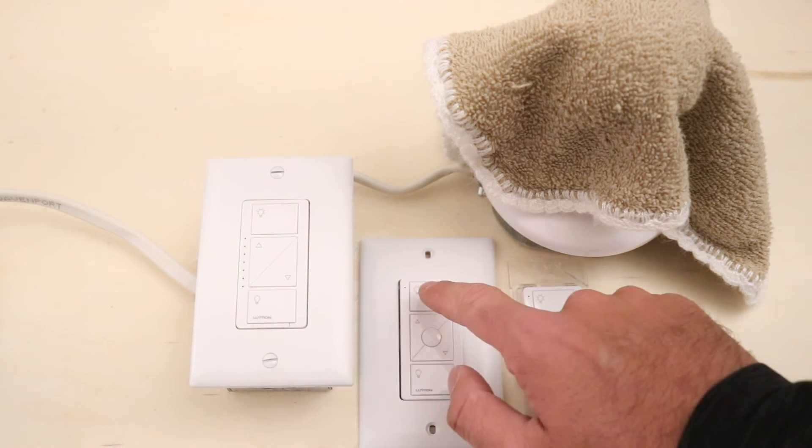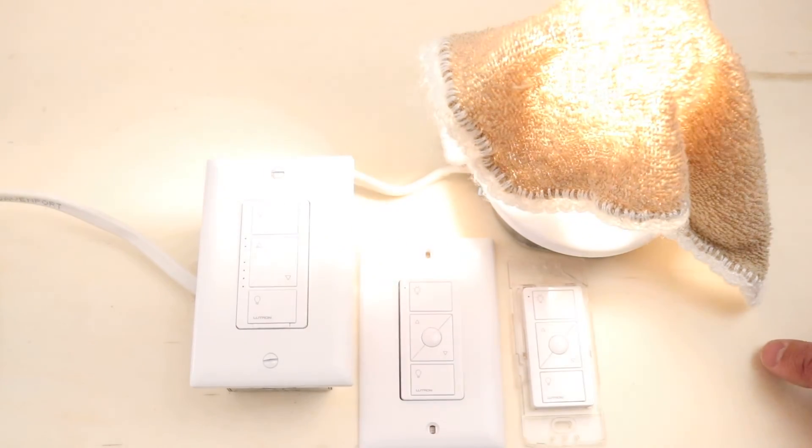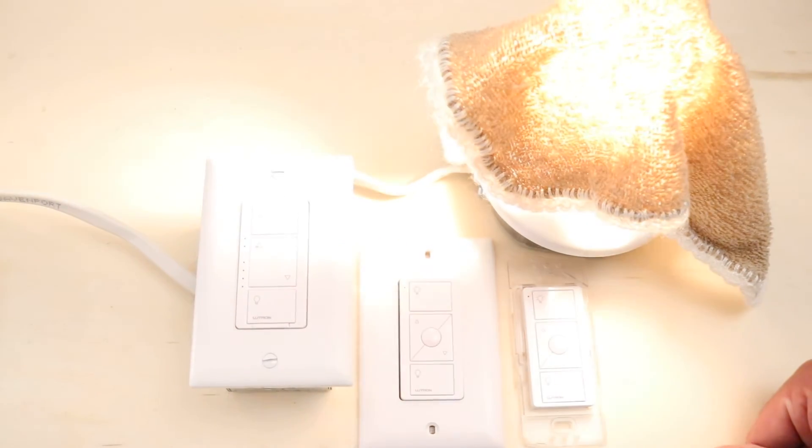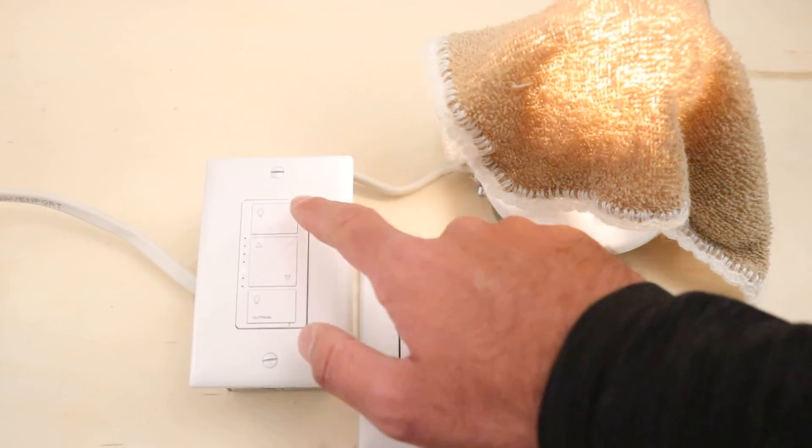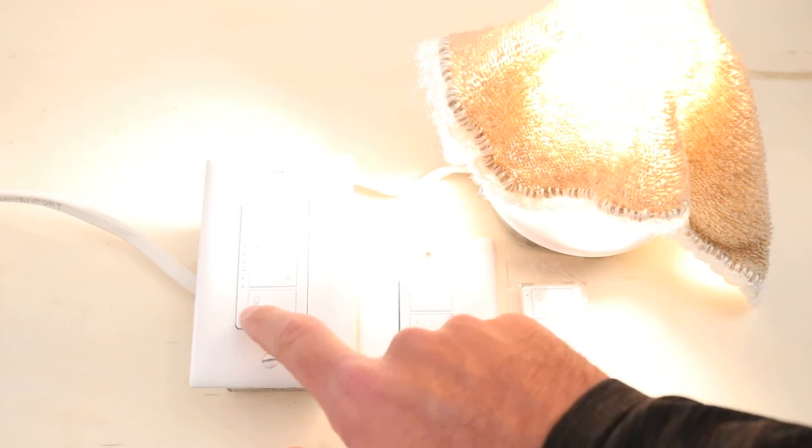You can now see that we've got both of these dimmers working, both of these remotes, and we can control it from either dimmer or we can control it from the actual switch itself.